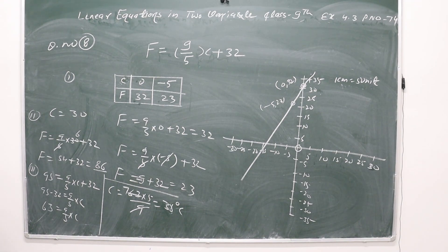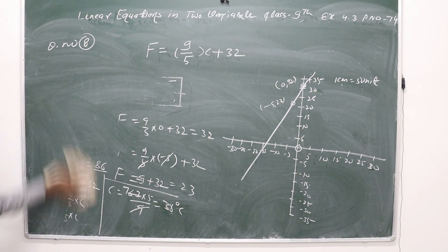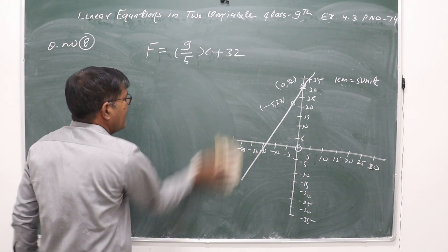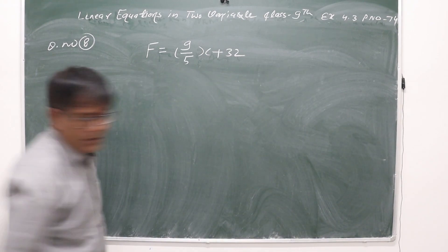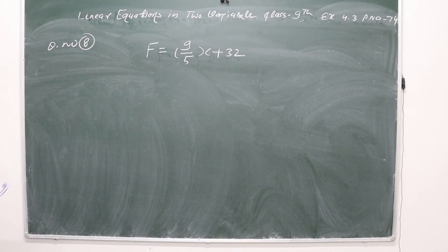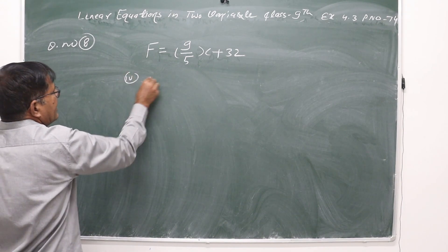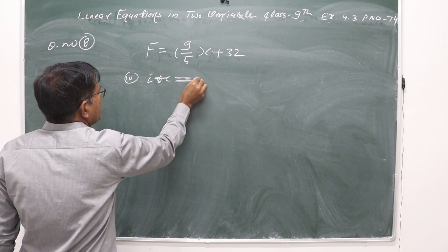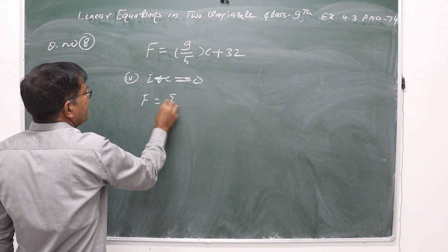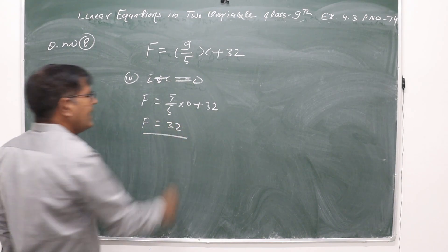Part four: if the temperature is 0 degrees Celsius, what is the temperature in Fahrenheit? Using F = 9/5 × C + 32 and putting C = 0, we get F = 32 degrees Fahrenheit.